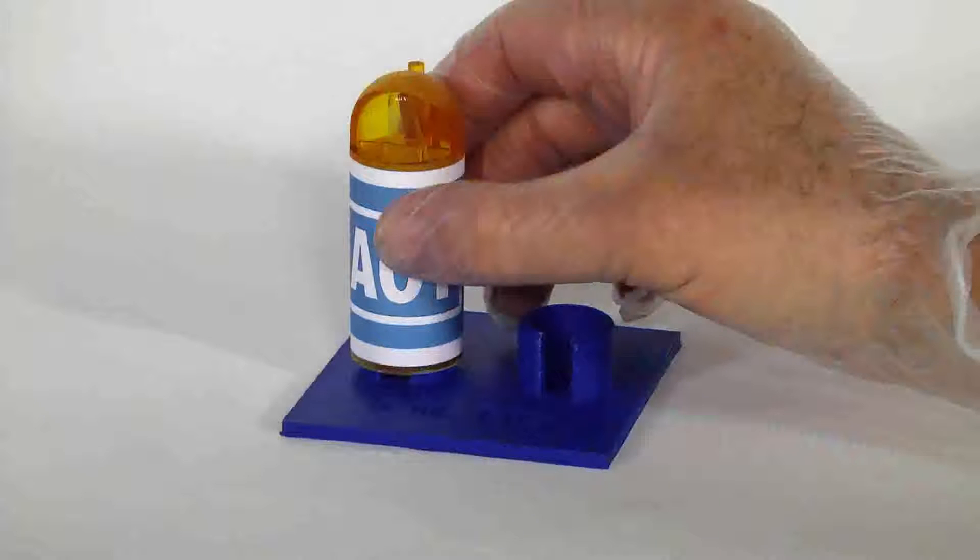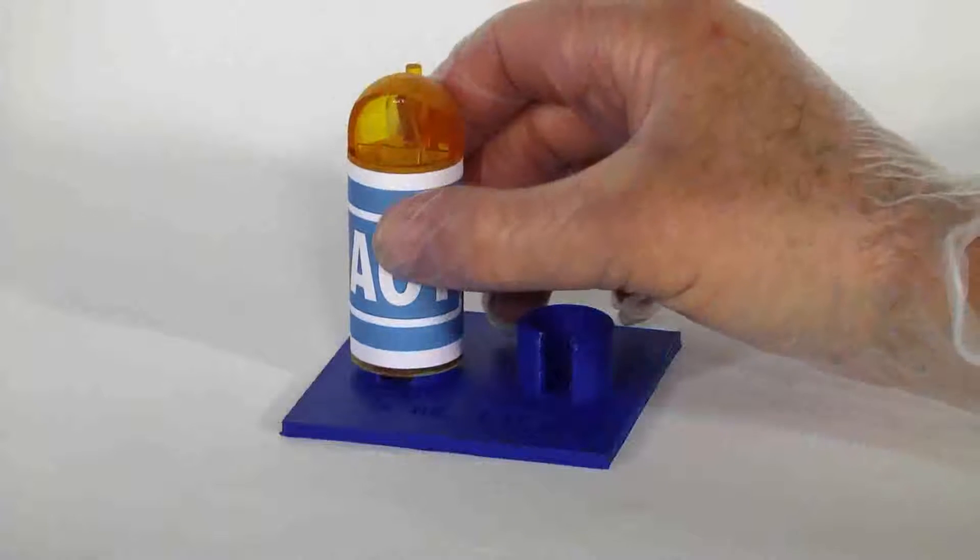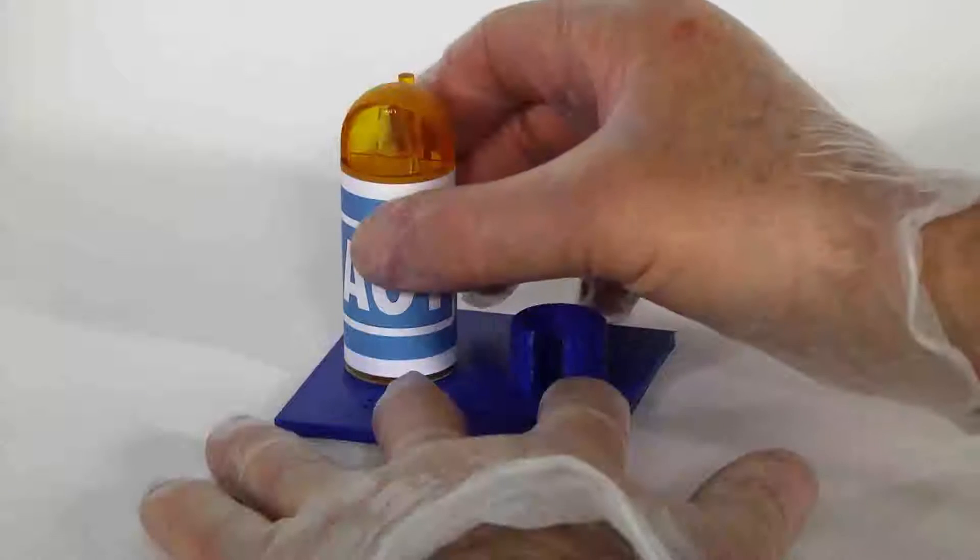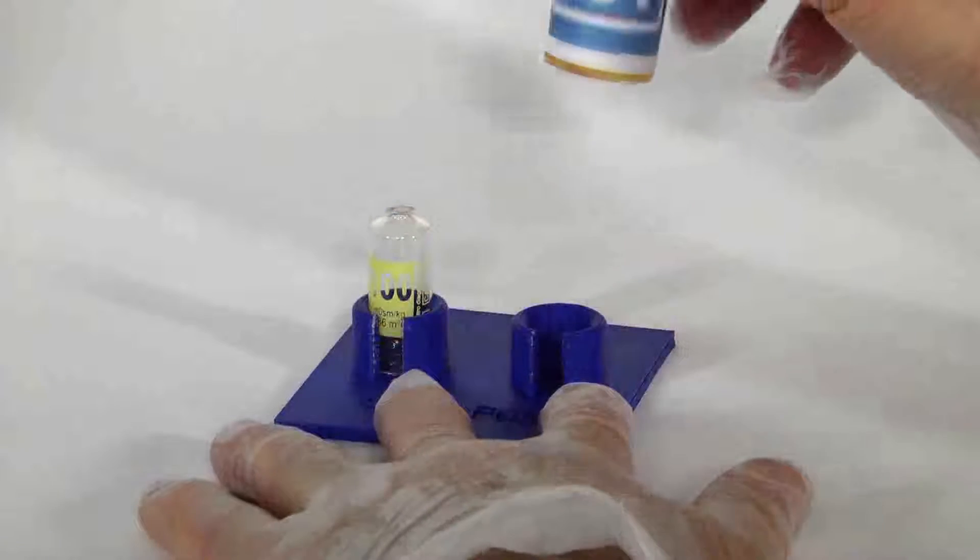Then apply slight to firm pressure until you hear a snap. Lift the opener straight up and the ampule will be open with a clean break and the neck is caught in the top of the opener.